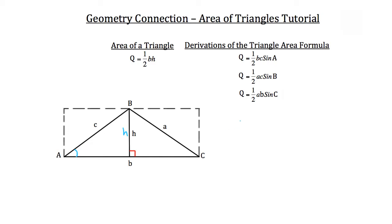You could say that the sine of angle A is equal to its opposite side length, which in this case is the height H, divided by the hypotenuse, which in this case is C — directly across from that 90-degree angle.